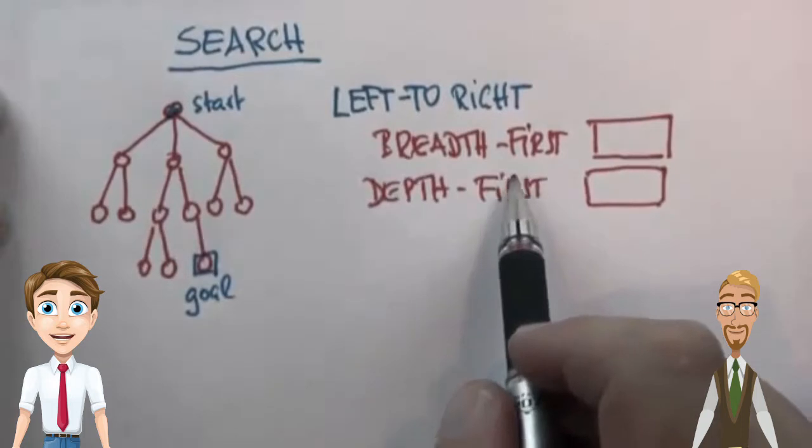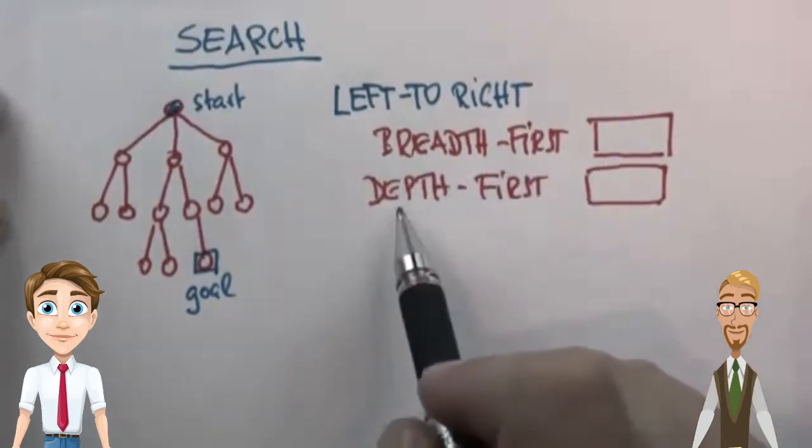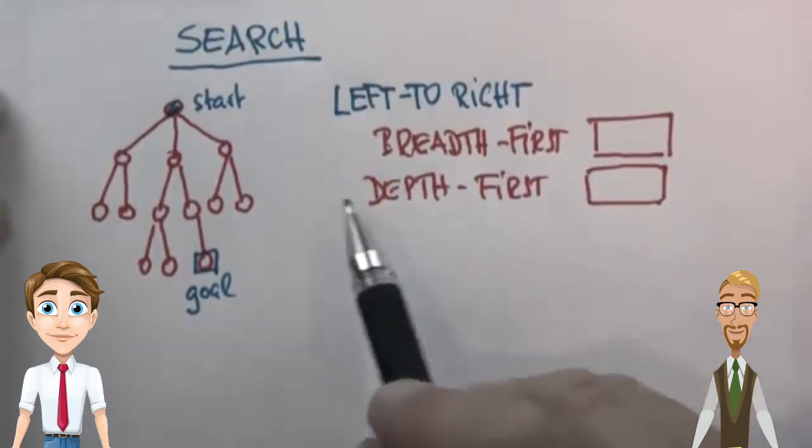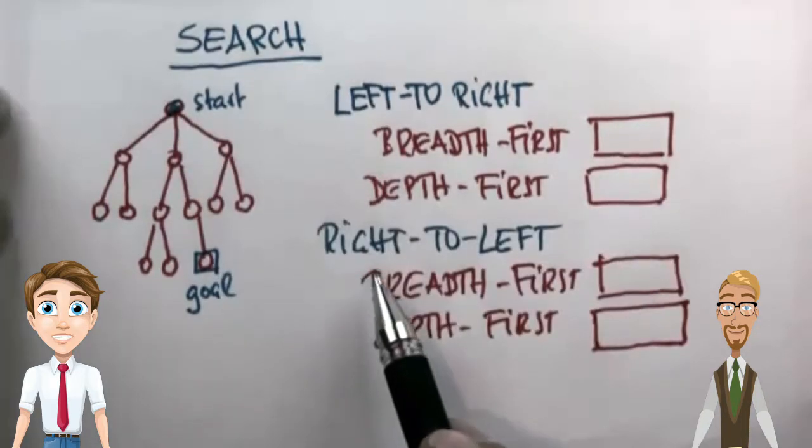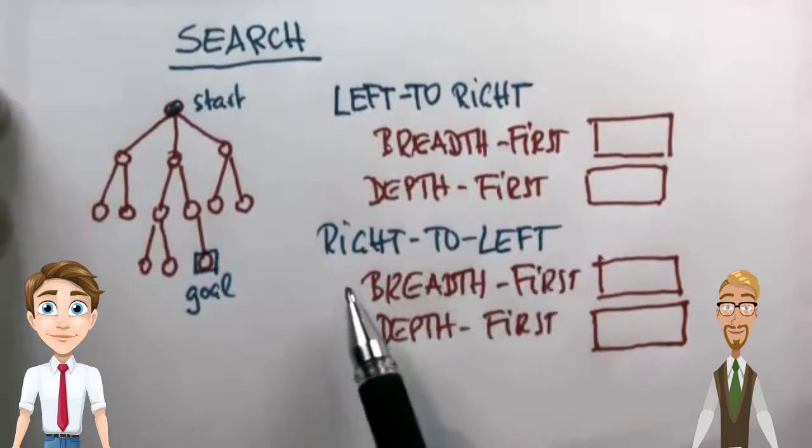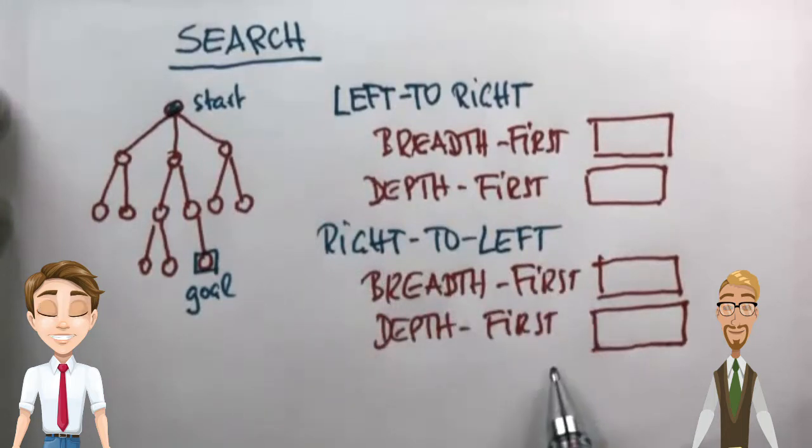I would like you to tell me the number of nodes expanded for breadth first search and depth first search. Please do count the start and the goal node, and please give me the same numbers for right to left search for breadth first and depth first.